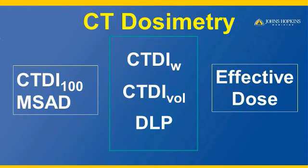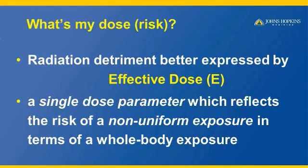When you say patient dose, we normally are interested in estimating effective dose. In order to arrive at the effective dose, we do measurement on what is called the CTDI-100, from which we measure or estimate other dose descriptors, finally arriving at effective dose. Because when a patient asks what is my dose, they typically mean what is my risk. They want an overall risk, which is explained by a concept called effective dose — a single dose parameter which reflects the risk of a non-uniform exposure in terms of whole body CT.